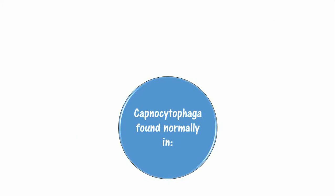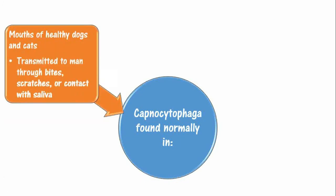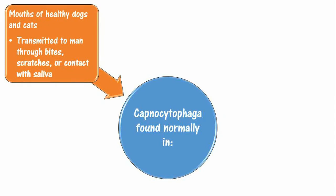How is Capnocytophaga transmitted? Capnocytophaga germs are commonly found in the mouths of healthy dogs and cats and as such never cause illness in themselves. These bacteria are usually transmitted to man through bites, scratches, or when saliva comes in contact with an open wound, anywhere the skin is broken, or a mucous membrane like eyes, nose, or mouth.